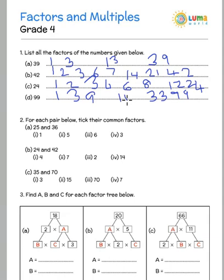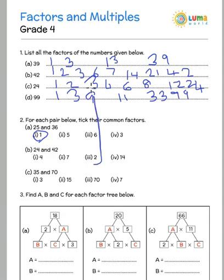We need to find the common factor of 24 and 42. As we said, 1 is always a factor of all numbers. 4 is a factor of 42 but not of 24. 2, however, happens to be a factor of both 24 and 42, so the answer is 2.